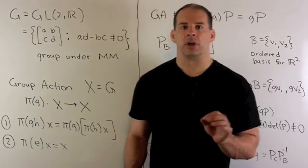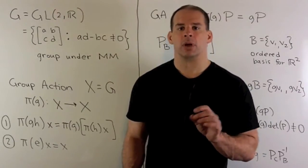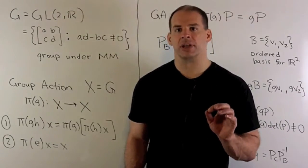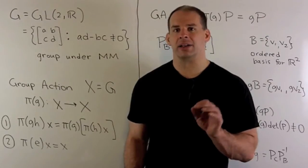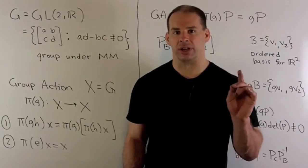Now, in our case with G equal to GL(2,R), we're going to consider two group actions. And we'll see that they're going to correspond to familiar operations in linear algebra.